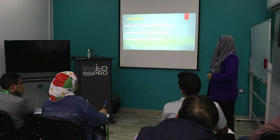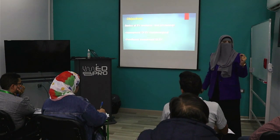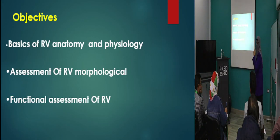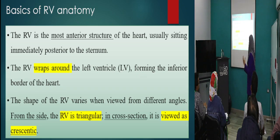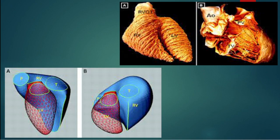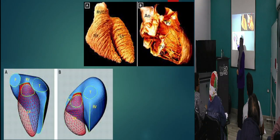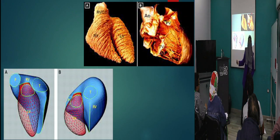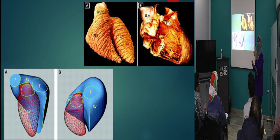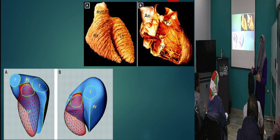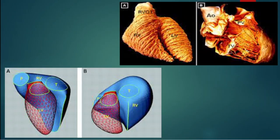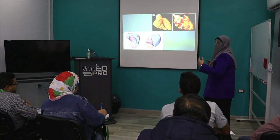We need to assess RV morphology using simple methods to assess RV function. We will depend on eyeballing and M-mode — these are the two options for assessment of RV function. The RV has complicated anatomy; it caps on the LV with three parts: the infundibulum, the inlet toward the tricuspid valve, and the outlet toward the pulmonary valve. We can't get the RV in one view; we need multiple views — apical four, parasternal long, and parasternal short — to see the RV from different sides.